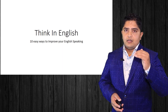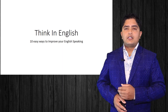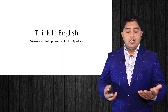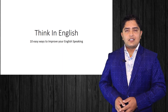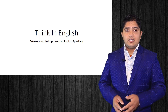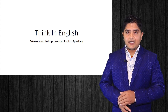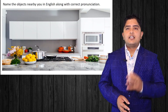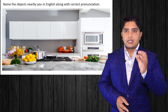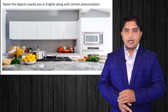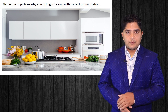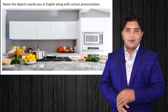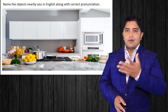So, how to think in English? The very first rule says: name the objects nearby you in English along with the correct pronunciation. Give the correct pronunciation to each particular object. You have to be able to give the name to the objects nearby you.